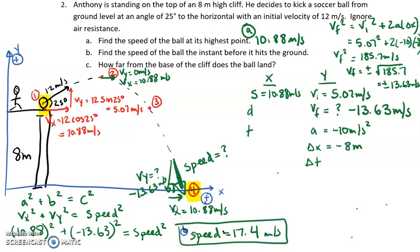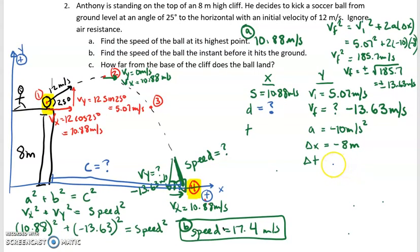So that is our answer to B. Now we want to find the last part of this. We want to find how far from the base of the cliff does the ball land. So that looks like that is the distance in the x direction, our horizontal direction. So I'm going to go ahead and put my question mark right there. We're going to have to find time. Now look at all this stuff in the y direction. We have a lot of stuff. I'm going to pick the easiest equation. Multiple ways to do it. Always pick the easiest one. I am going to use Vf equals Vi plus a times delta t. So Vf, keep in mind, was negative 13.63. Vi, 5.07 plus acceleration is negative 10 times delta t.